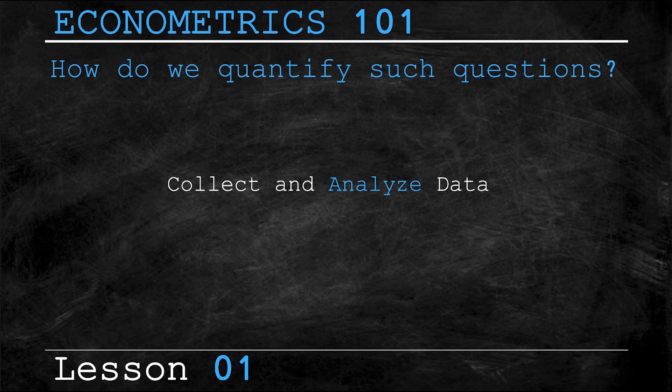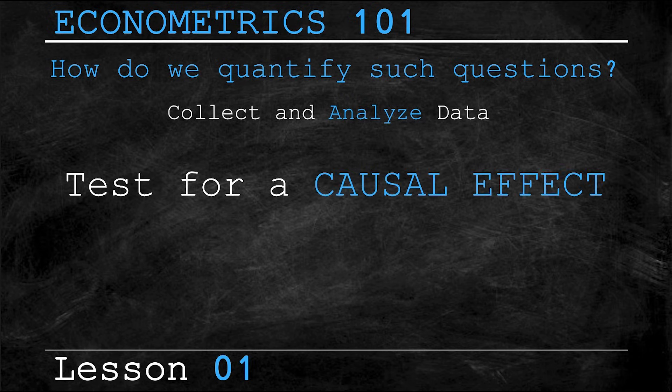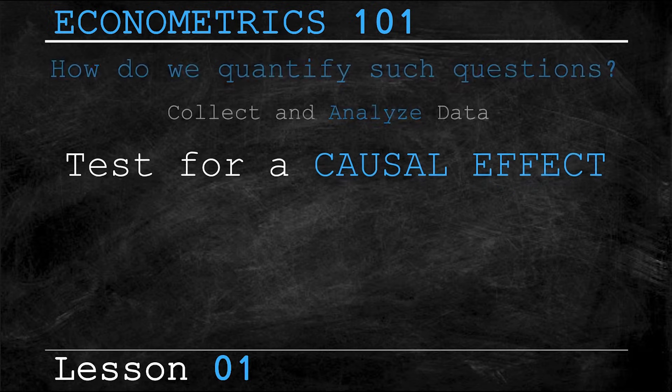Well, over the course of the coming lessons, we'll cover a variety of specific ways to analyze various forms of data. But perhaps a better question to ask now is why do we analyze data? Well, we want to test for something called a causal effect. Generally speaking, an action is said to cause an outcome if the outcome is a direct result of the action itself. To illustrate, consider the following examples.